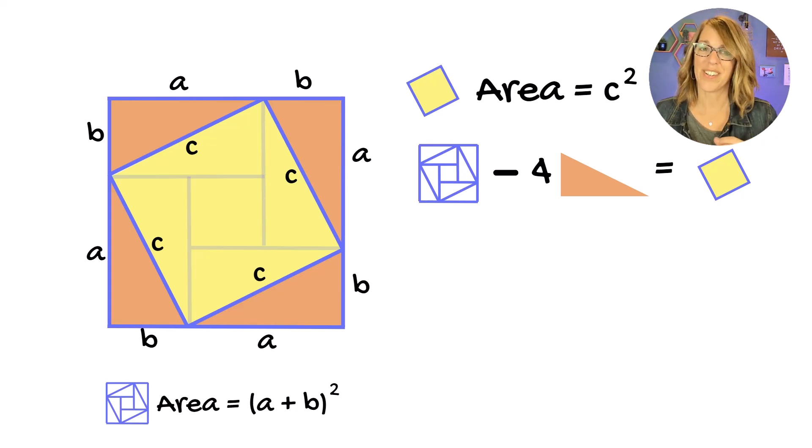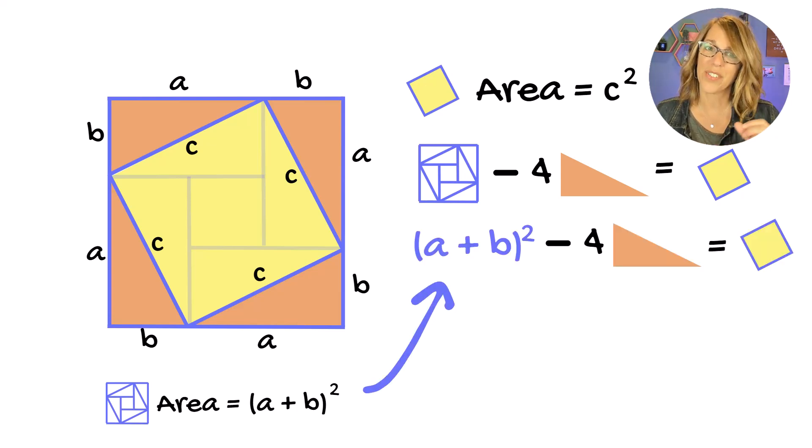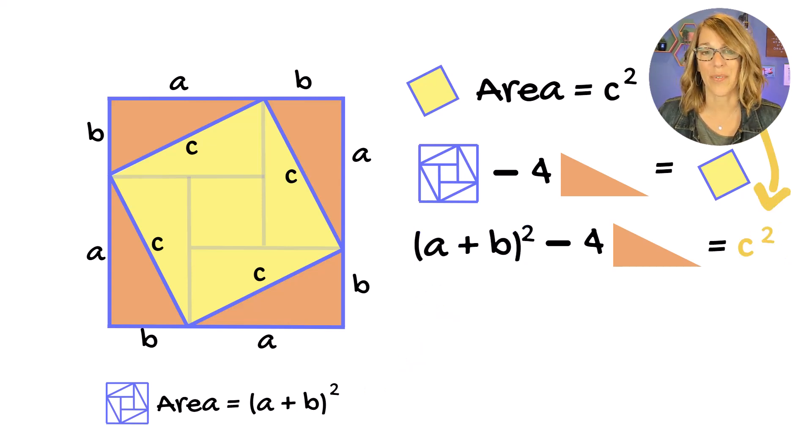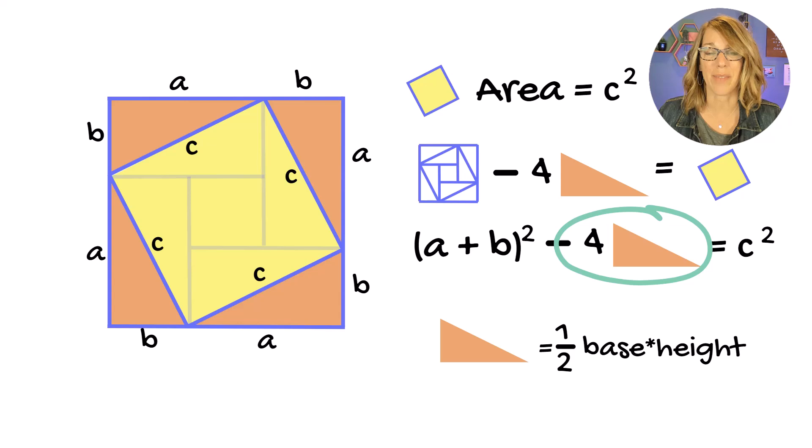Let's get our formulas in here so we can do the math. That outer square is A plus B squared, and the inner square is C squared. That leaves me with just the triangles, but the area of a triangle is one half base times height.